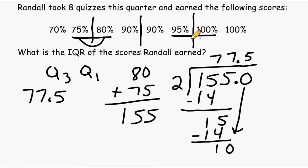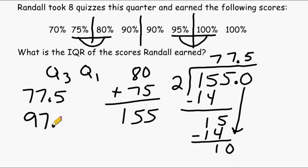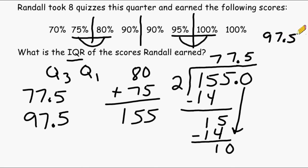Let's use that same strategy to find Q3. 95 and 100 are also five apart, so half that distance is two and a half. 95 plus two and a half is 97.5. Now we have the values needed to find the IQR.